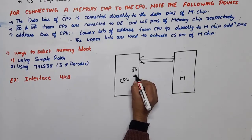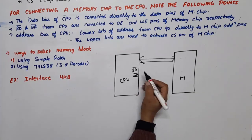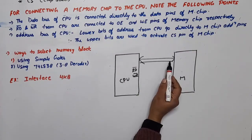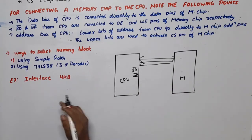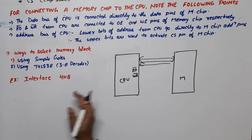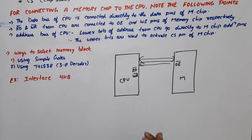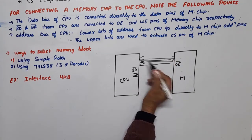The CPU either performs a read operation or a write operation. If the CPU wants to read data, it wants to take data from memory — the transfer will be from memory to CPU. In that case, OE bar (output enable) should be active. When output enable is active, data flows in the direction from memory to the microprocessor.